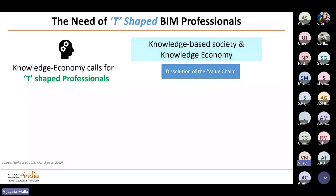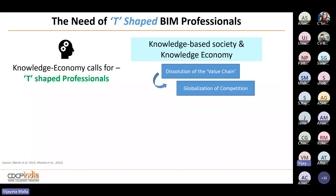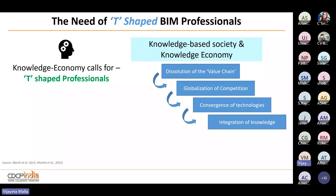A knowledge economy is different from the regular financial economy. Based on recent literature, four things characterize it: the dissolution of the value chain, globalization of competition, convergence of technologies like Construction 4.0 technologies as Arun specified, and the integration of knowledge from processes, standards, and people with the use of technologies. These four elements together constitute the knowledge economy.